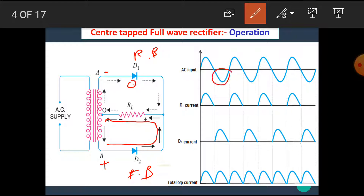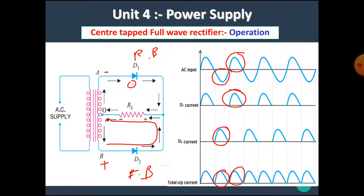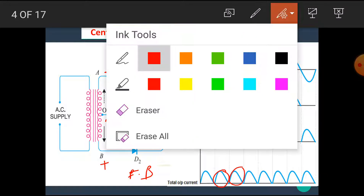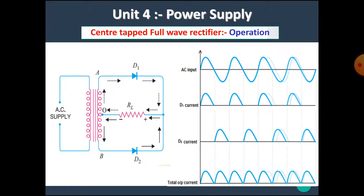During the negative half cycle, only diode D2 conducts and output appears across the load. Again, during the positive half cycle, diode D1 becomes forward biased and output appears across the load. I hope you all now understand the operation of center tap full wave rectifier.